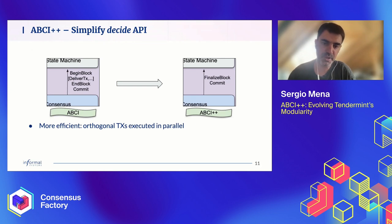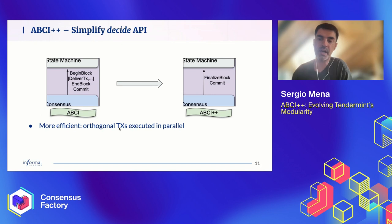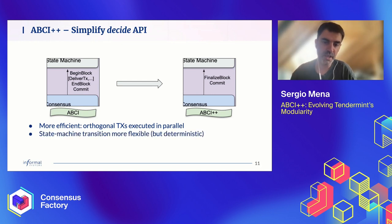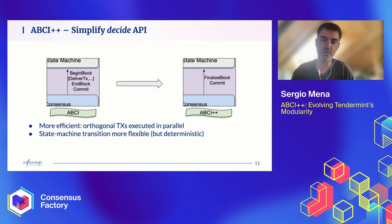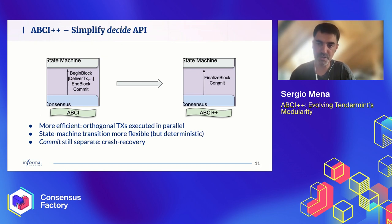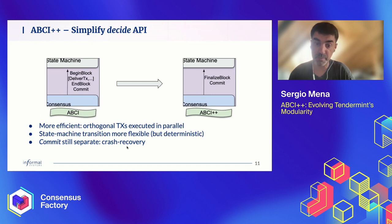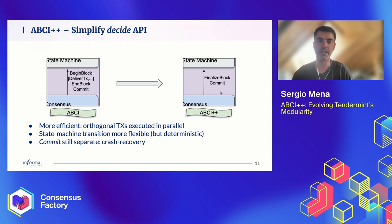What are the advantages? The application can now be made more efficient because if the block contains orthogonal transactions, those transactions might be executed in parallel since they arrive at the application at the same time. More generally, you can make the state machine transition more flexible — you don't have to follow strict order as long as you are deterministic. As you can see, Commit is not coalesced into FinalizeBlock; it's still a separate call. The reason is that Commit is crucial for our current crash-recovery mechanism — it signals the application to persist its state.